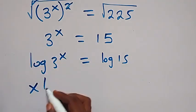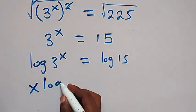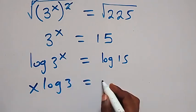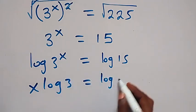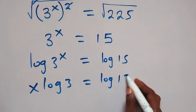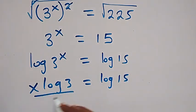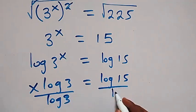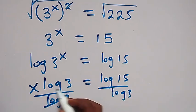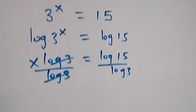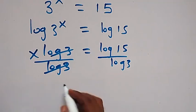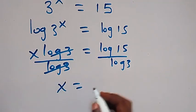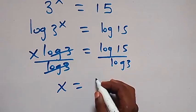Applying the power law of logarithms, we can bring x to the front, giving x times log 3 equals log 15. We then divide both sides by log 3, leaving x equals log 15 over log 3.